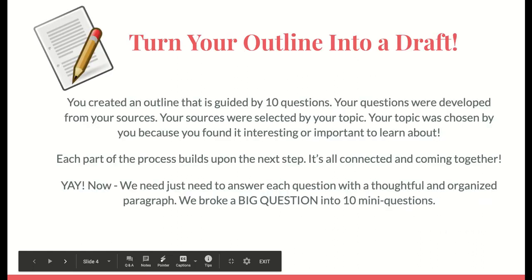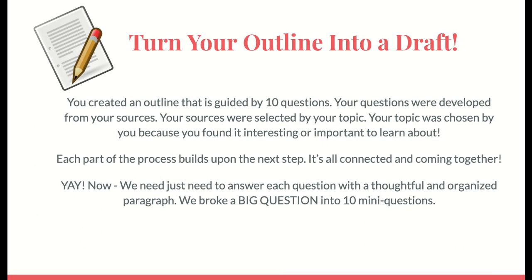You should have with you an outline guided by 10 different questions. The questions were developed from your sources, and your sources were selected by your topic — a topic you chose because you found it interesting or important to learn. So you created this interconnected web of ideas, questions, and sources that all connect back to that topic or question you sought to answer. Each part of the process builds upon the next step. It's all connected.